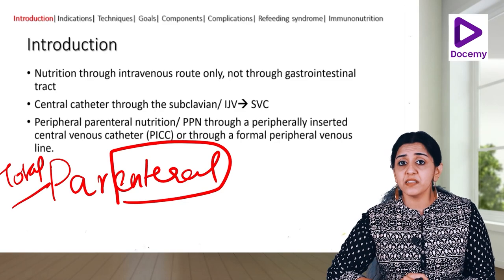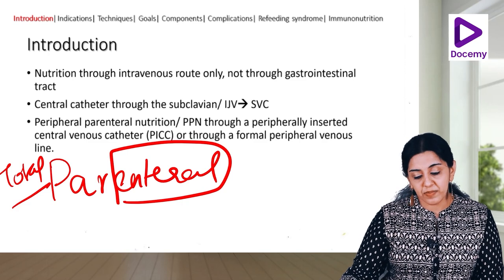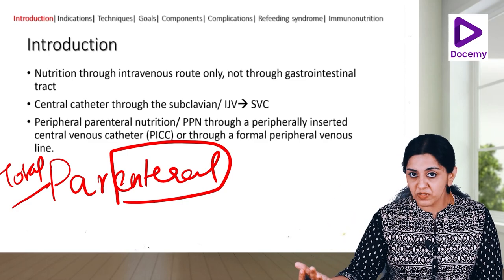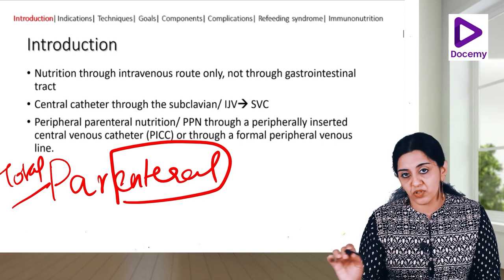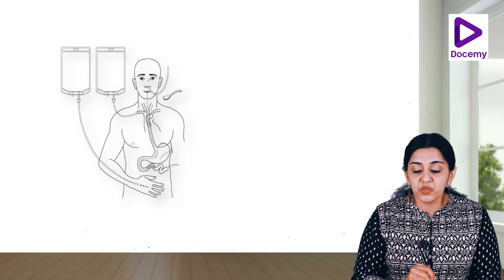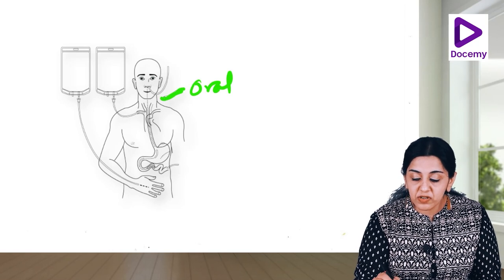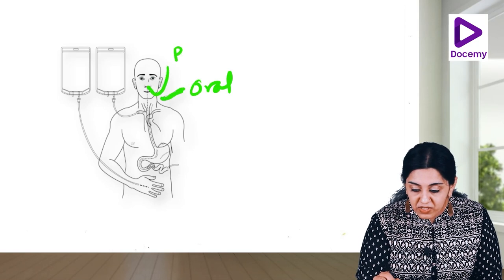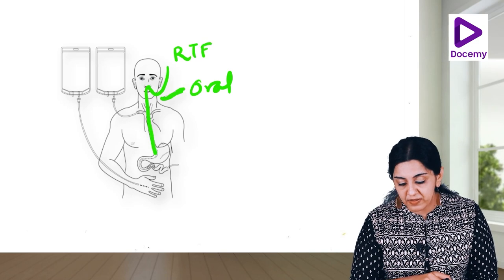Total parenteral nutrition means nutrition is only through parenteral means - outside the gut, only through the intravenous route, not through the gastrointestinal tract. This picture shows the ways in which you can feed the patient: the first is by spoon, that is orally; the second is through the nose - nasogastric tube feeds through the nose to bring food to the GIT.